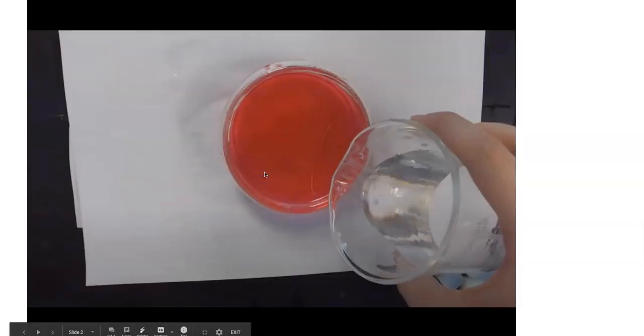The first thing I want to show you is this really cool chemical called phenolphthalein. Look that up if you're interested in how to spell it. Phenolphthalein is a clear liquid. And when you add a base to it, it's going to turn pink.